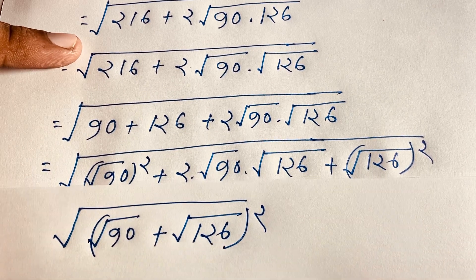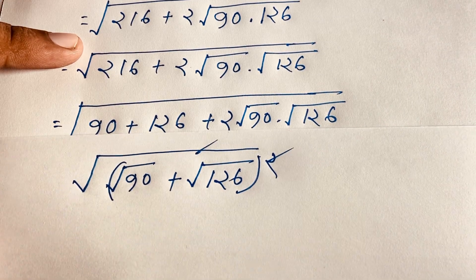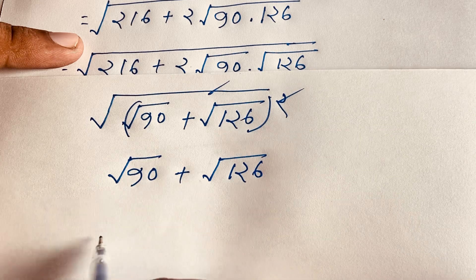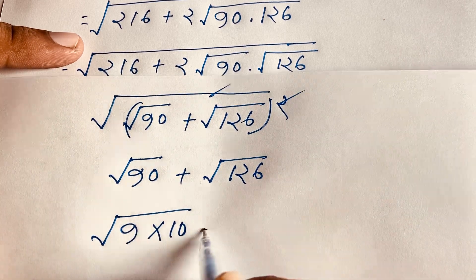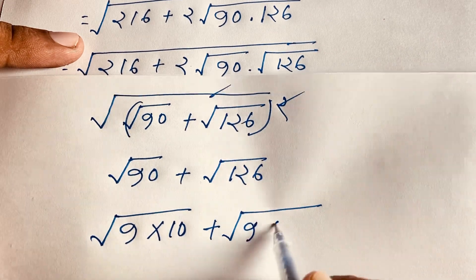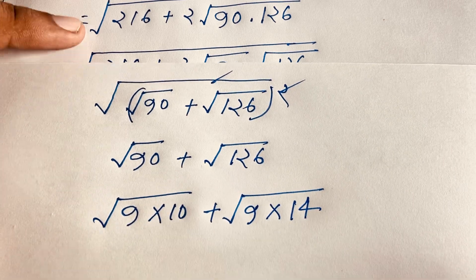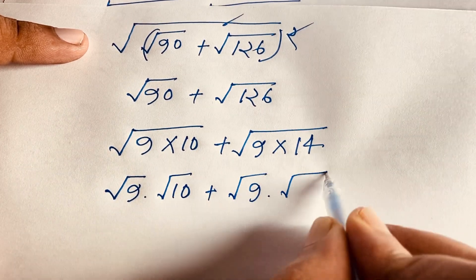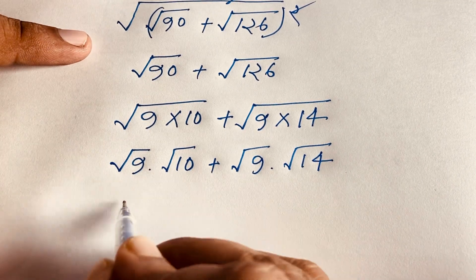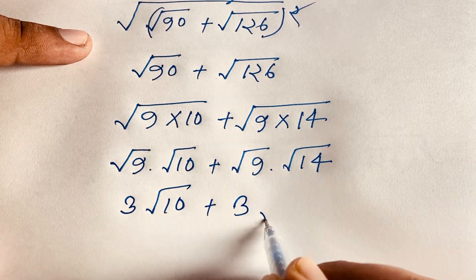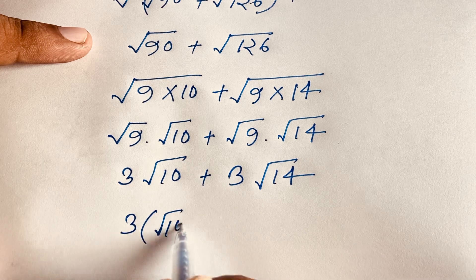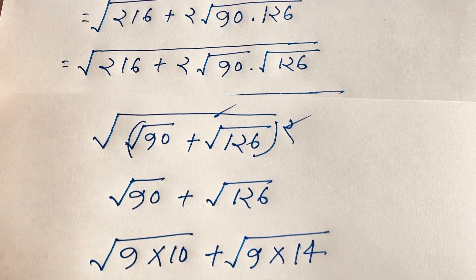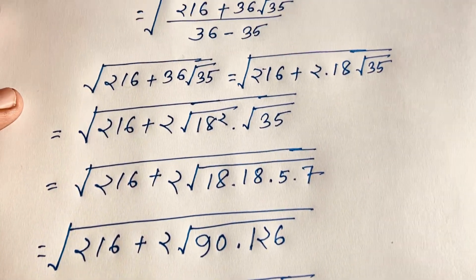Then the square and square root cancel out, giving us square root 90 plus square root 126. Now square root 90 equals square root of (9 times 10), and square root 126 equals square root of (9 times 14). This gives square root 9 times square root 10 plus square root 9 times square root 14, which is 3 times square root 10 plus 3 times square root 14. Since 3 is common, the final answer is 3 times (square root 10 plus square root 14). Thank you all — if you enjoy this video please subscribe to my channel. Goodbye, take care.